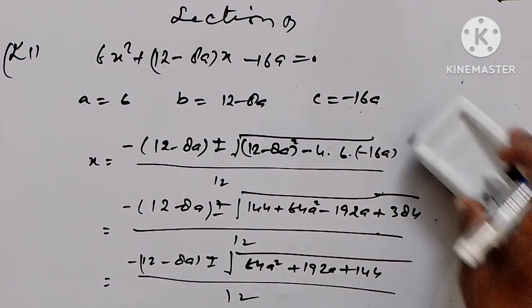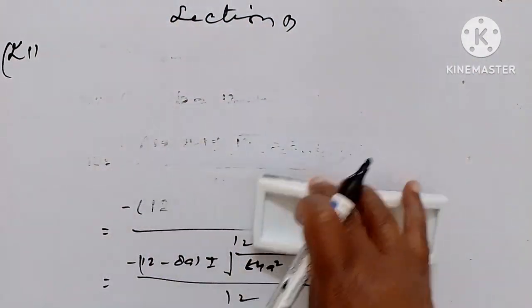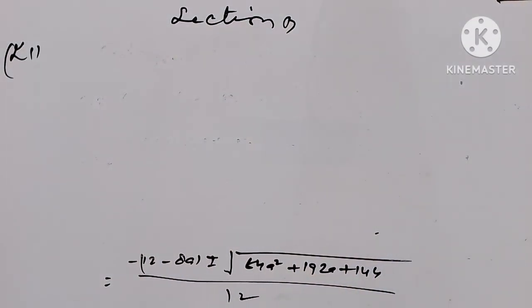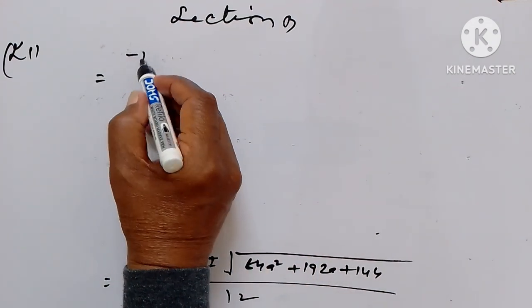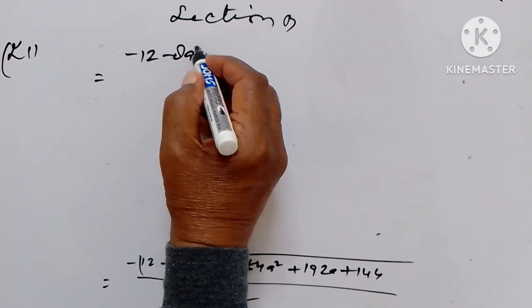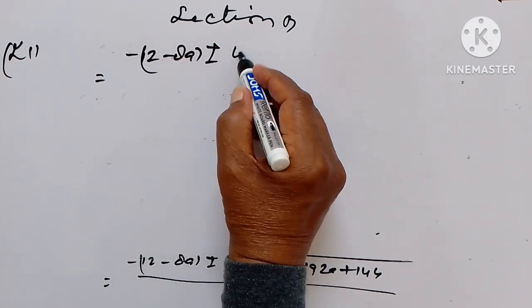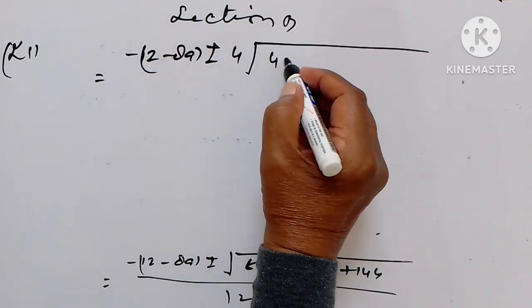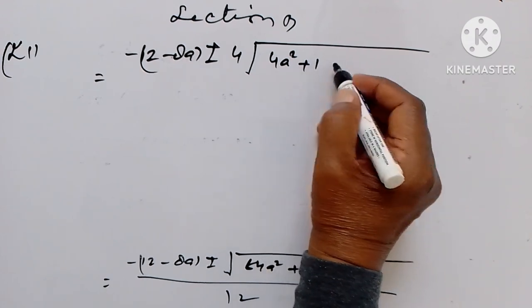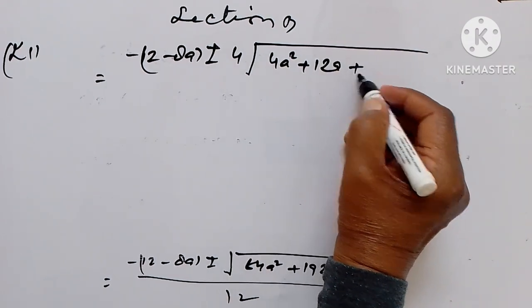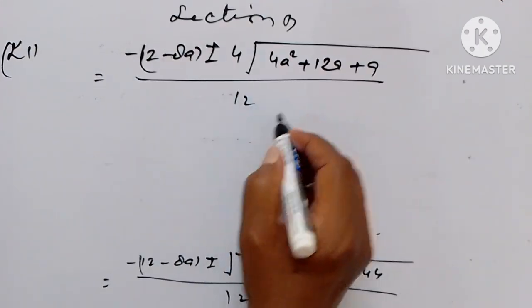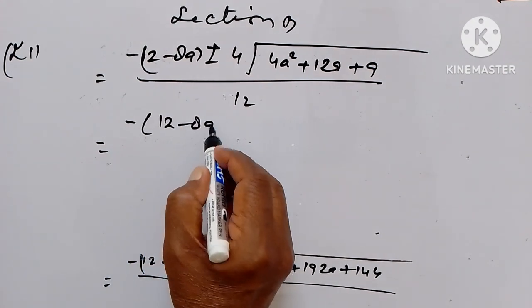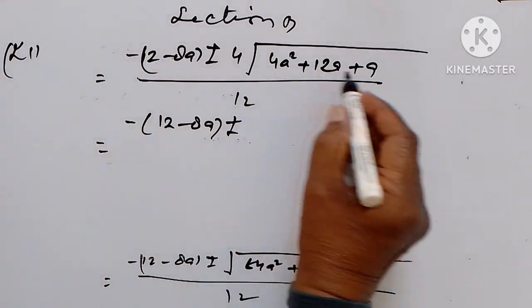We get minus (12 minus 8a) plus or minus under root. The expression becomes 64a² plus 192a plus 144, all upon 12. All is taken common from inside, and this equation becomes 4a² plus 12a plus 9.